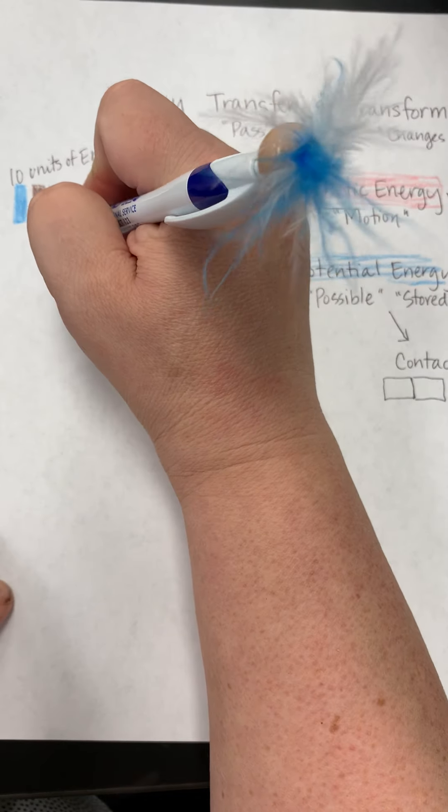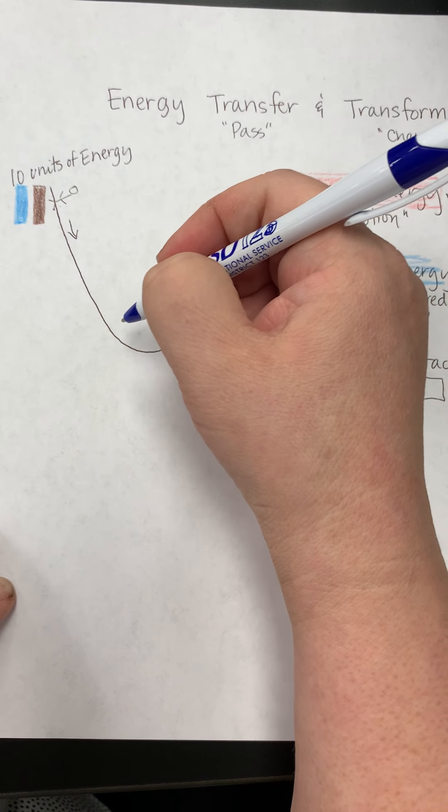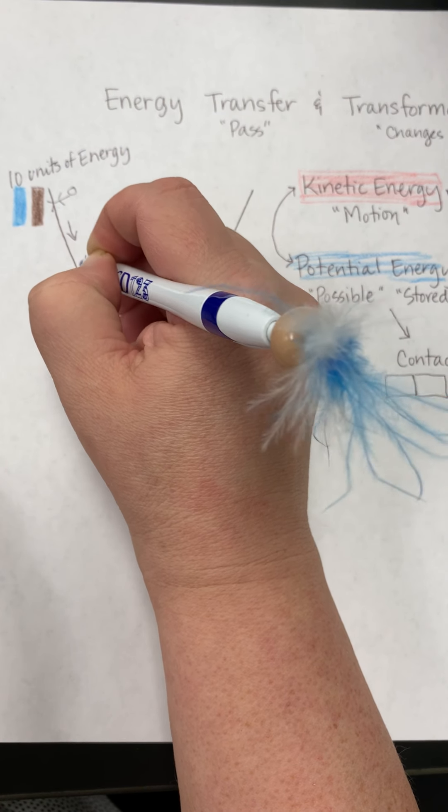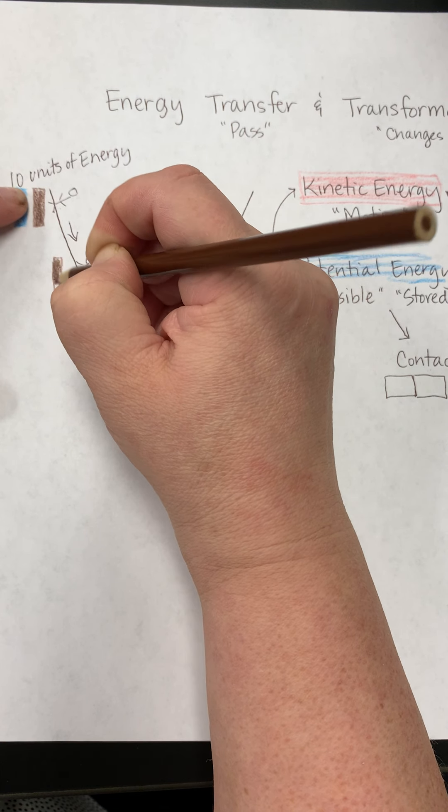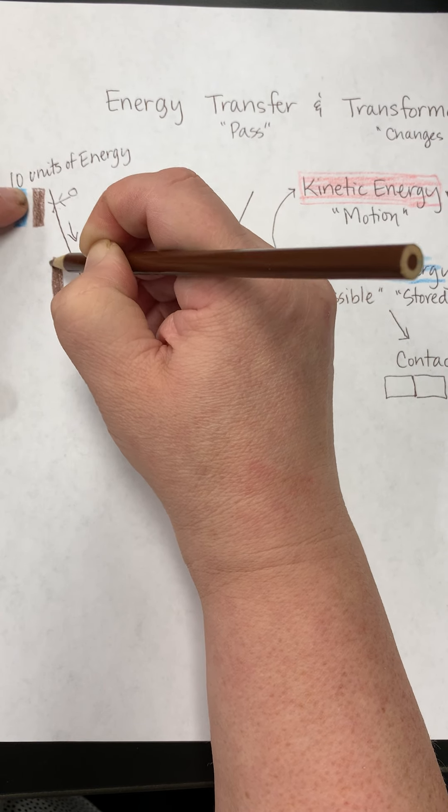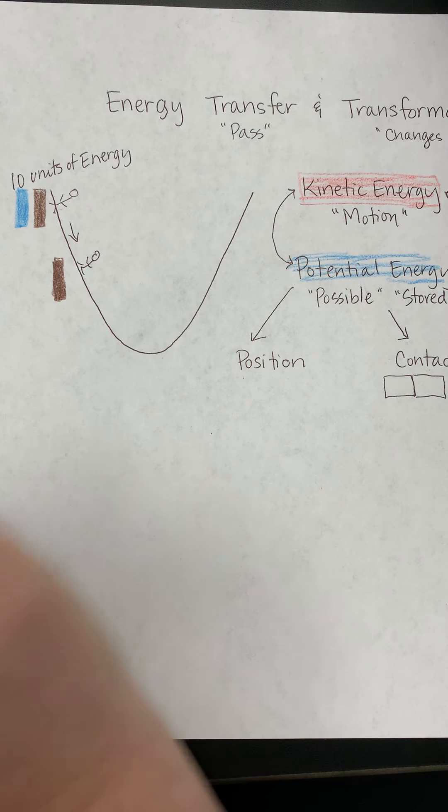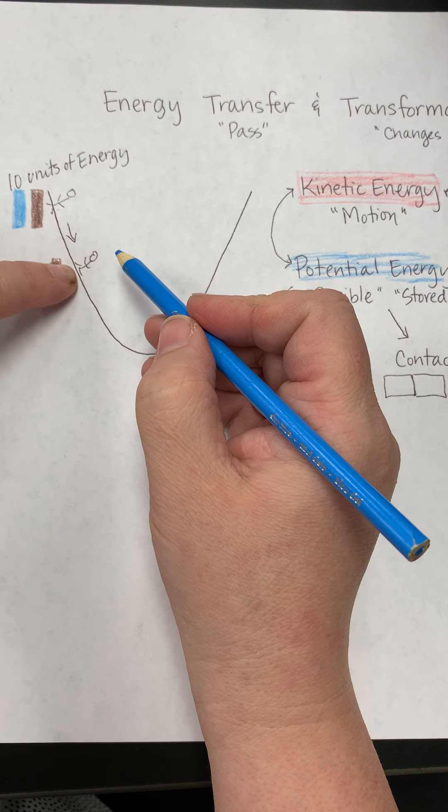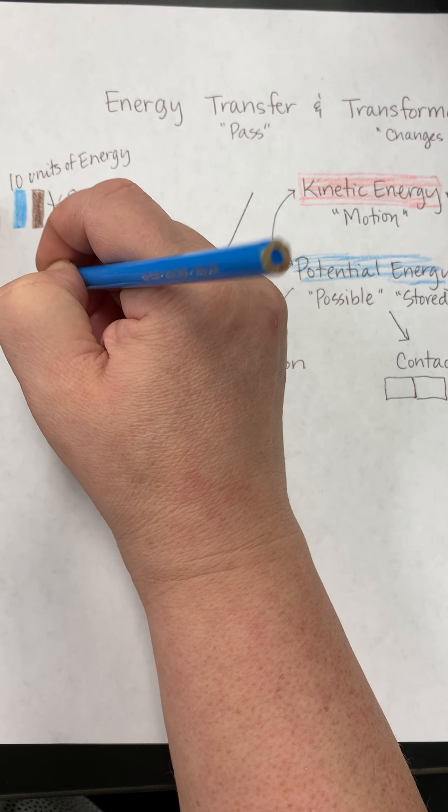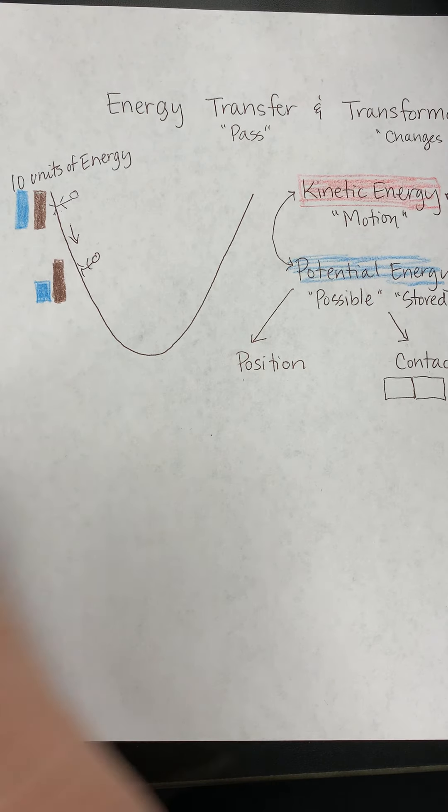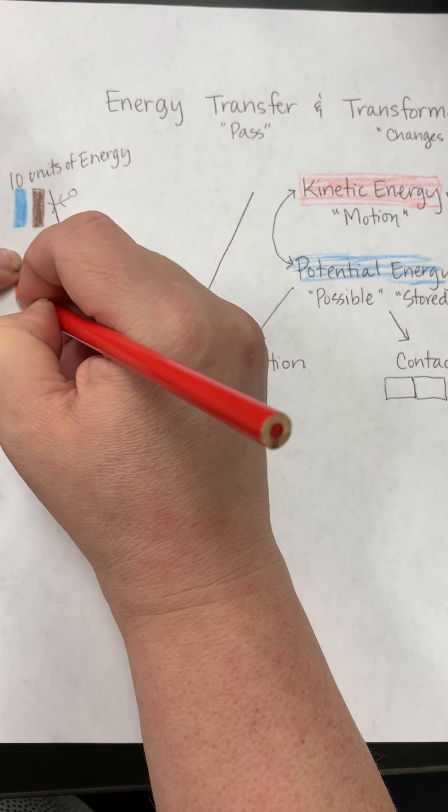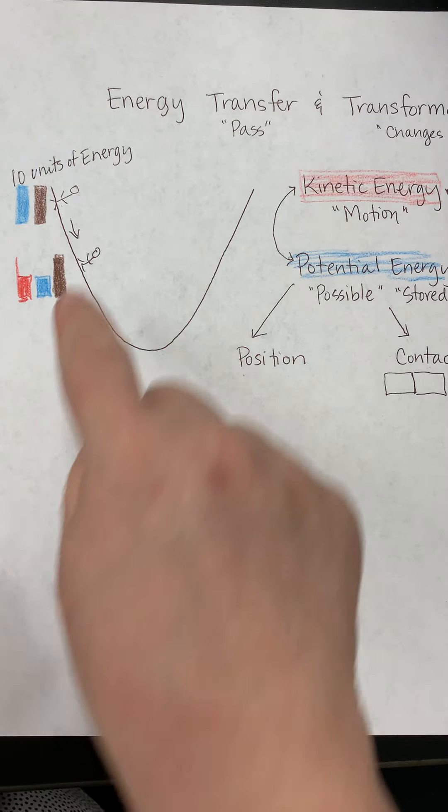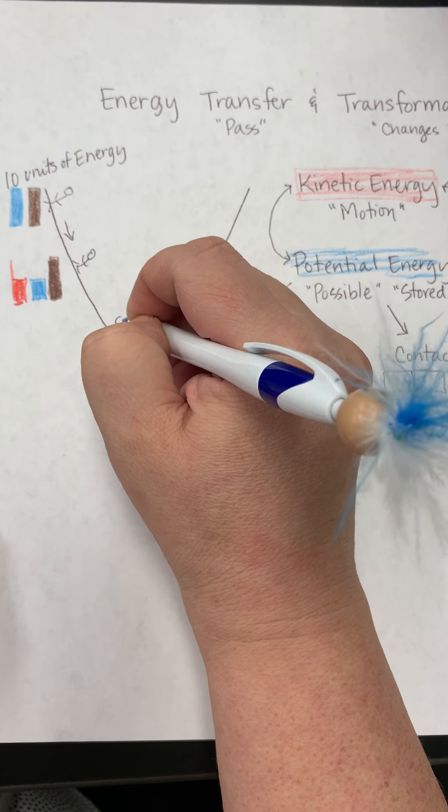But the moment that this skateboarder begins to roll down the ramp, it's a different story. So, we still have, let's say the skateboarder is here. We still have the same amount of total energy. And this is that idea of conservation of energy. This is not going to change. This total value will always be 10 units. But now, the skateboarder is lower, so there's less potential energy. And the skateboarder is moving. So, we now have kinetic energy.